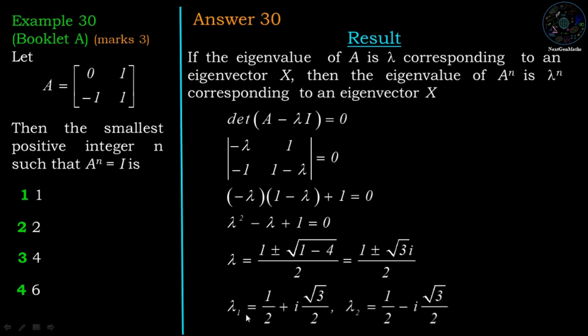Therefore, we have two values of lambda: lambda 1 equal to 1 by 2 plus i root 3 by 2, and the second value lambda 2 equal to 1 by 2 minus i root 3 by 2.